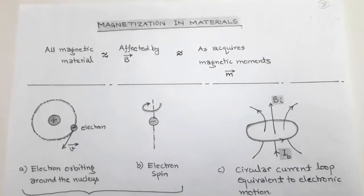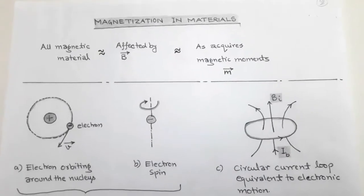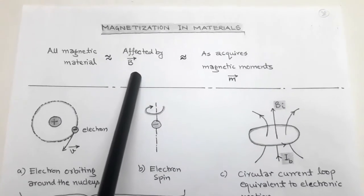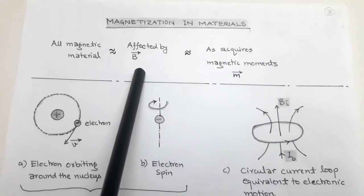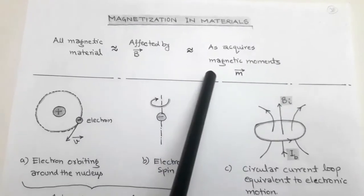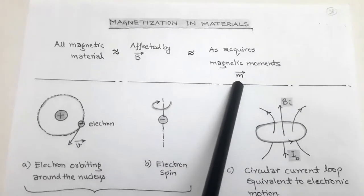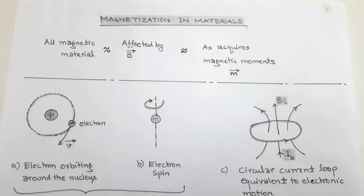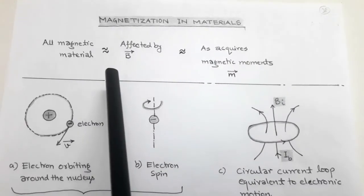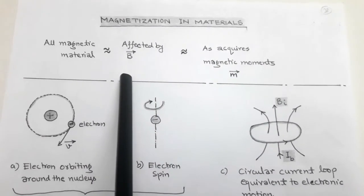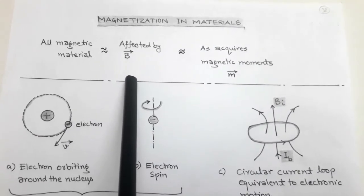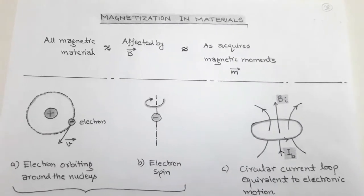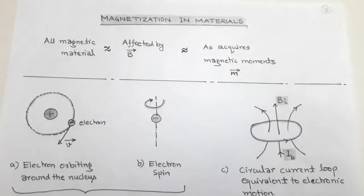The topic is magnetization in materials. All magnetic materials are affected by an external magnetic field B vector, as the magnetic material acquires some magnetic moments or magnetic dipole moments, denoted by small m. The magnetic material has the property to get magnetized by the influence of the external magnetic field B vector, acquiring some magnetic moments. This is called the magnetization of the material.